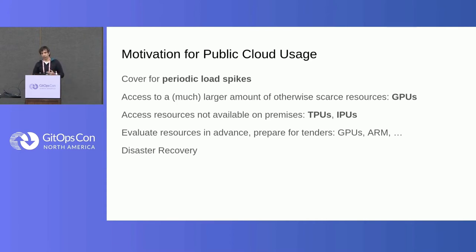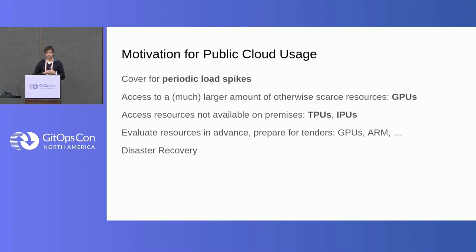With a lot of machine learning happening — but also at CERN — we have needs for a large amount of accelerators: GPUs and dedicated accelerators like TPUs and IPUs. For GPUs, we have some in-house but we need a lot more, so we go to the public cloud for extra resources. For TPUs — the Tensor Processing Units from Google — we can't have them on-premises, so we use them on the public cloud. We also use public cloud resources to get access to new types of resources and evaluate them before doing big tenders on-premises. And disaster recovery is another use case we have.